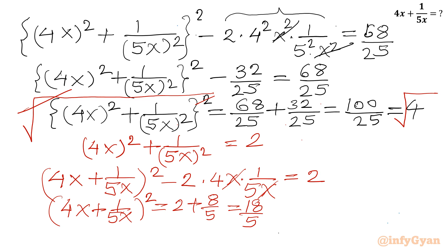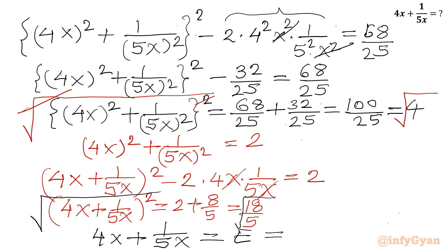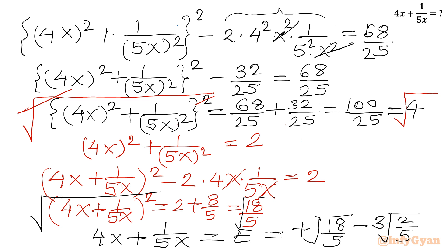Now we take the square root once again to get our answer. The left hand side becomes 4x plus 1 over 5x, which is our required expression. On the right hand side we have plus or minus, but we reject the minus sign since x is positive. So we can write square root of 18 over 5, or 3 times square root of 2 over 5. This is our final answer: E equals 3 times square root of 2 over 5.